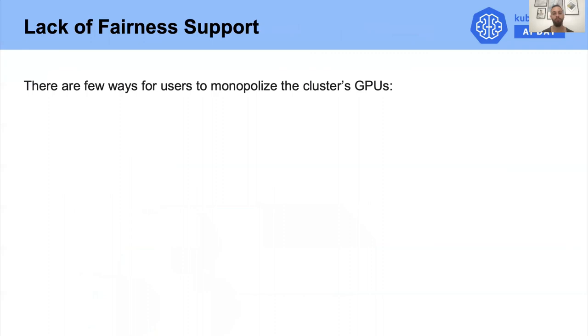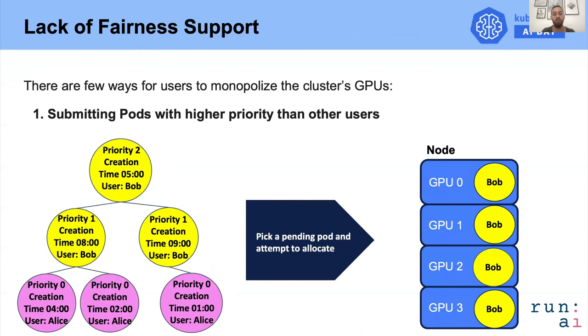Using the default Kubernetes scheduler for sharing a cluster with a limited number of GPUs can cause fairness issues, because data scientists can monopolize the cluster. One way for users to monopolize the GPUs is to submit pods with the highest priority they are allowed to submit, which would make their pods move to the top of the heap, causing their pods to be allocated first.